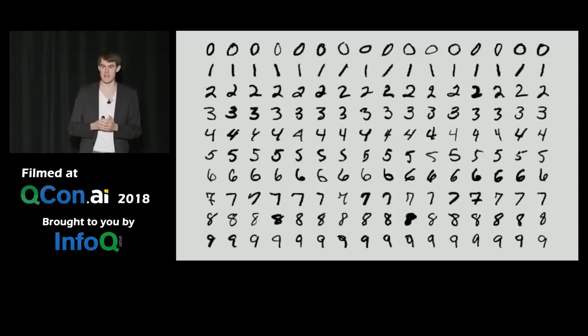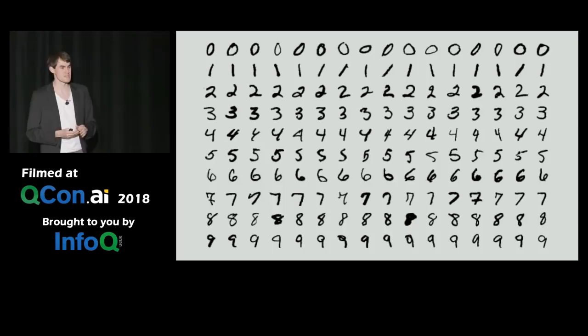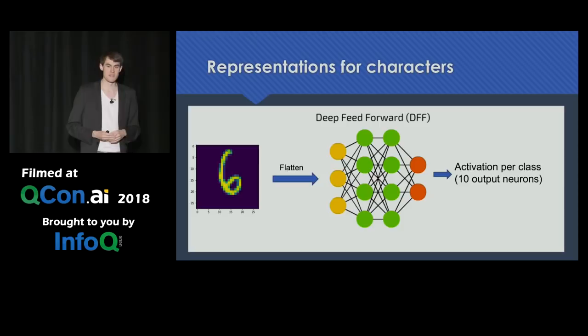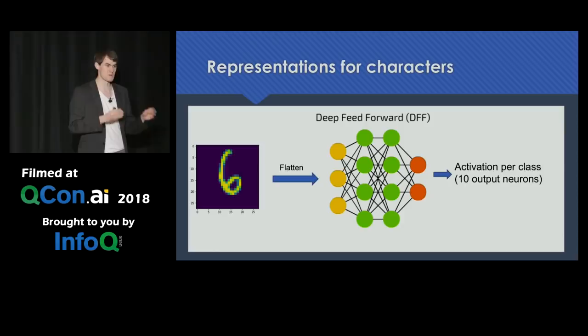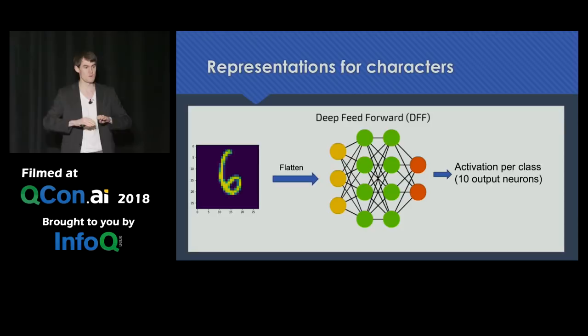Let's try to do something more interesting now. We can predict the price of a house, but let's try to predict some digits. In this case we have an activation per class, so we have ten output neurons, one for each digit. We want an output neuron to be very high when we observe that certain digit, and low when we don't.